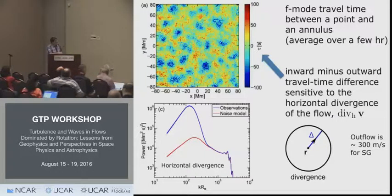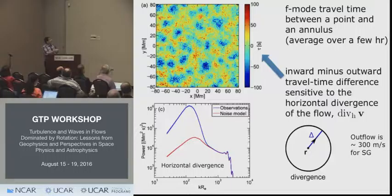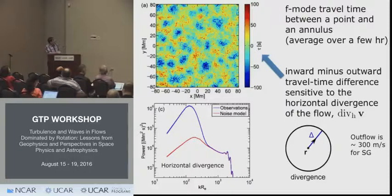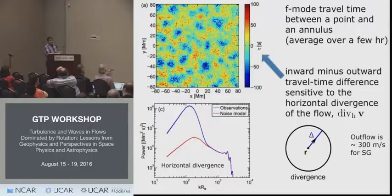A slightly different geometry uses a central point and an annulus. We measure travel times between the central point and the annulus in both directions; the difference is sensitive to the horizontal divergence of the flow. Here is a map constructed over eight hours of solar supergranulation. Blue means outflow, reddish means horizontal surface inflow. The power spectrum of this map shows a peak around spherical harmonics degree 100 to 120 — the characteristic scale of supergranulation — corresponding to an average of the top two megameters where F modes propagate.